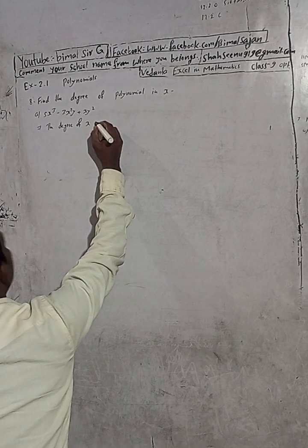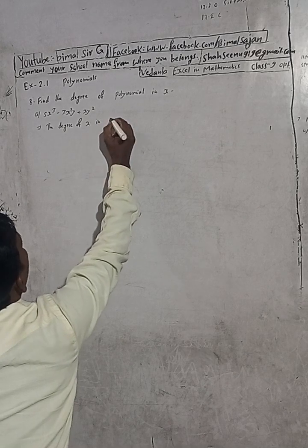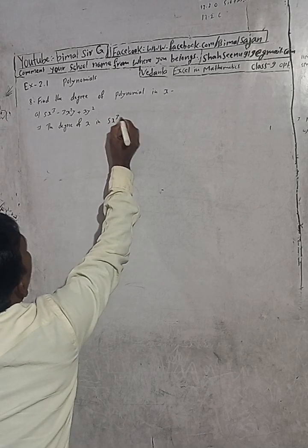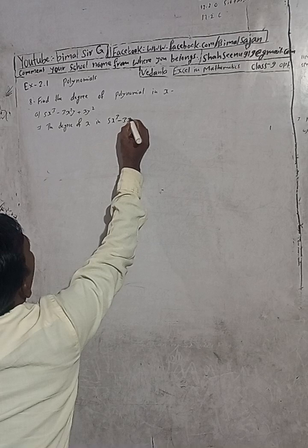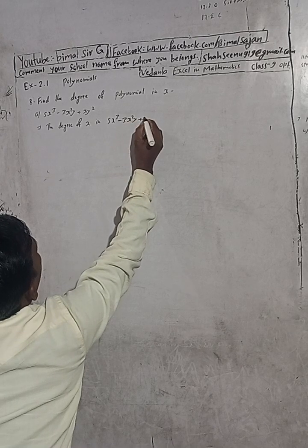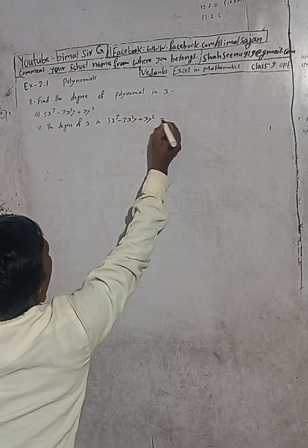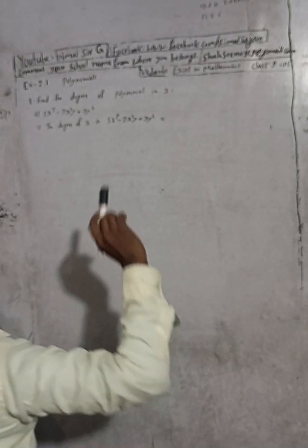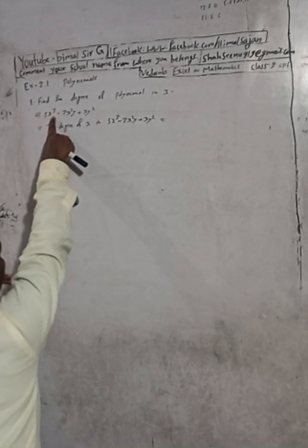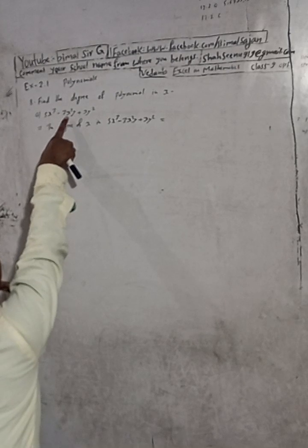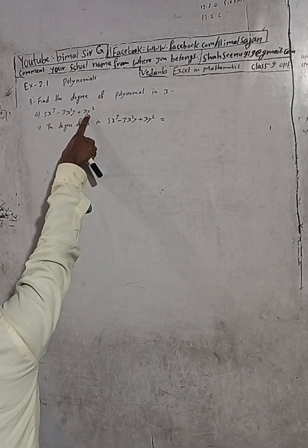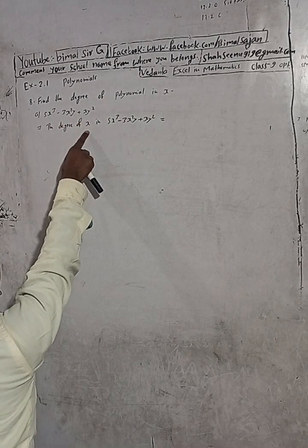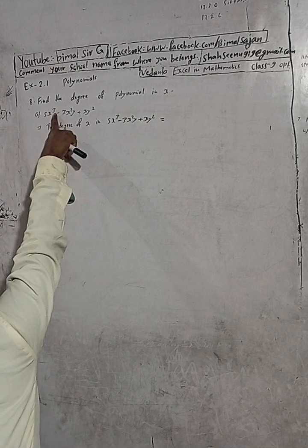The degree of x in 5x³ - 3x²y + xy² is equal to 3. Here you can see the power of x is 3, here the power of x is 2, and here the power of x is 1. I have to find the degree of x, so the highest power is 3. That's why the answer is 3.